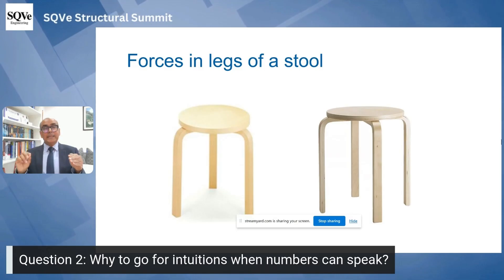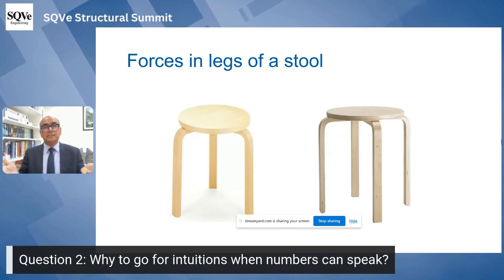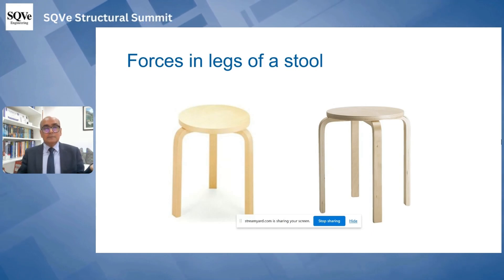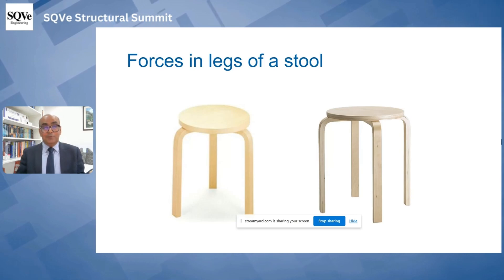I want you to think about a three-legged stool and a four-legged stool. If a person weighing 90 kg is sitting on a three-legged stool, what would be the reactions at the supports? The three-legged stool has three supports. Now, if the same person sits on a four-legged stool, how will the load be distributed? The answer is simple: 90 divided by 3 is 30, and 90 divided by 4 is 22.5.